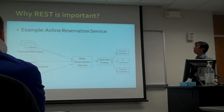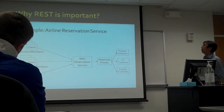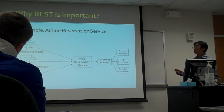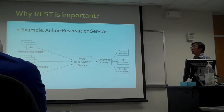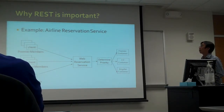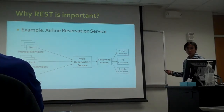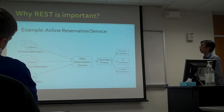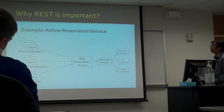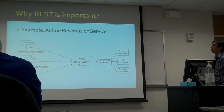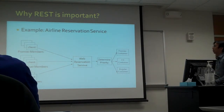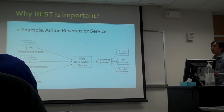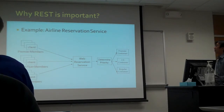Why is REST important? Here is an example of an airline reservation service. There are two kinds of designs to implement the service. In the first design, there are three kinds of members: Premier, Frequent Flyer, and Regular. The airline provides a single URL to the members, and the service is responsible for examining each client's request to decide the priority of the client and process them accordingly.